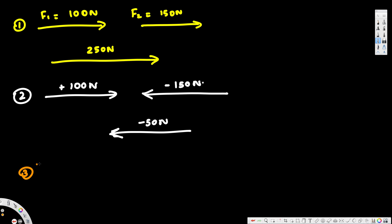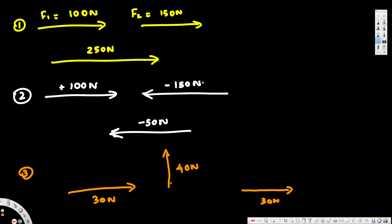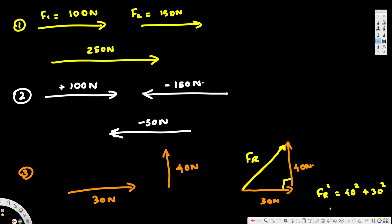Now let's see what happens if we have two vectors that are perpendicular. Say we have 30 newtons in the x direction and 40 newtons in the y direction. We can use the head-to-tail method: place the first vector, then connect the tail of the second vector to the head of the first. This forms a right-angle triangle, so we use the Pythagorean theorem: FR² = 40² + 30², therefore FR = 50 newtons.